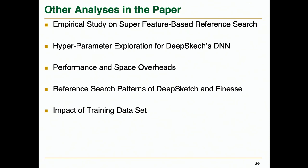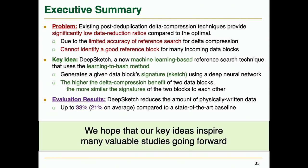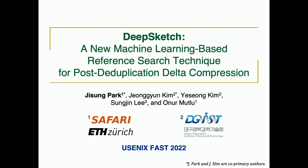Please see our full paper for more detailed analysis and evaluation, including an empirical study on super feature-based reference search, hyperparameter exploration for DeepSketch's DNN, and analysis of performance and space overhead, reference search patterns, and impact of training dataset. In conclusion, we tackled the limited data reduction benefit of existing post-deduplication data compression techniques and proposed a new machine learning-based reference search technique that can significantly improve the data reduction ratio. We hope that our key ideas inspire many future studies going forward. Thank you for listening.